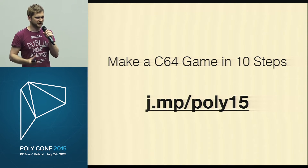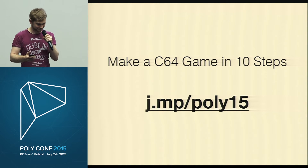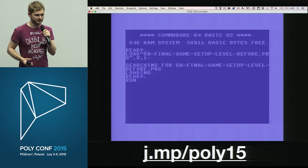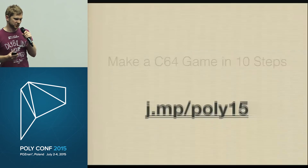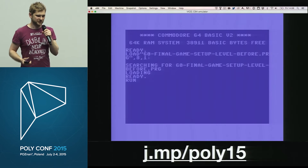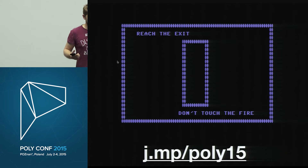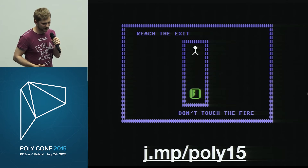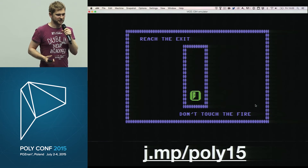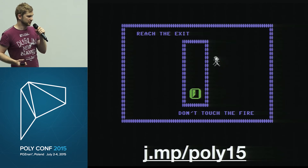First, you will change the color, then draw a level, then draw some sprites, then move them around, then move them to the appropriate place, then change the color and use the appropriate graphics for sprites. Then move it vertically, add some delay, then move it horizontally, then move it using a joystick. Then detect collisions with the fire and the exit, use collision detection to change levels, add some colors, and finally animate the flames.